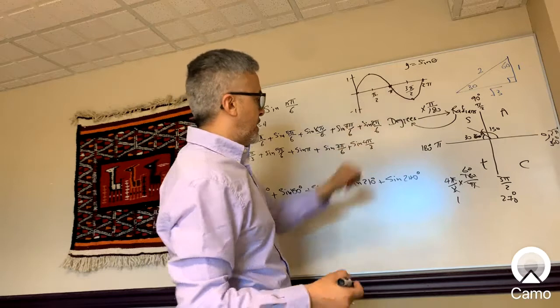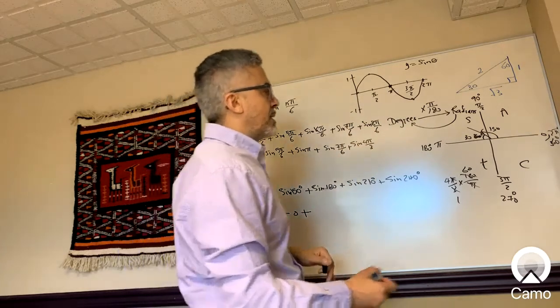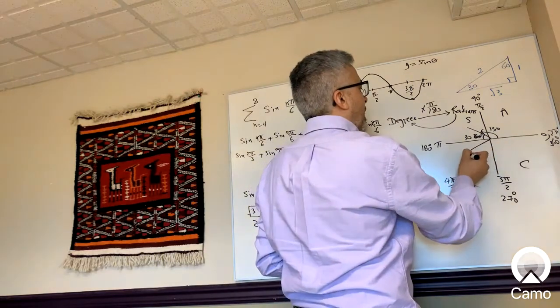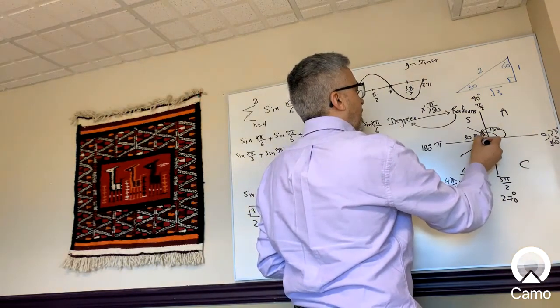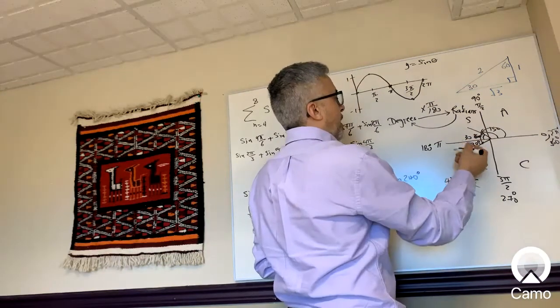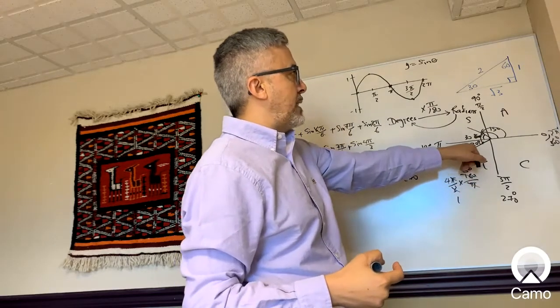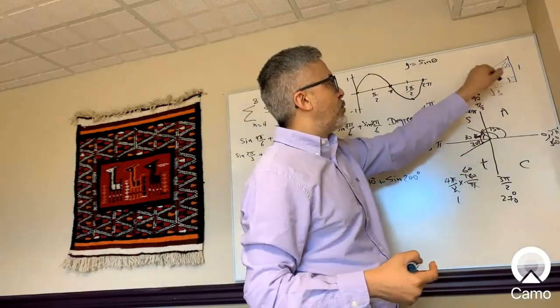Plus sine 210. 210 is right here, and the reference angle is 210 minus 180, which gives you 30 degrees. Sine is negative in this quadrant, and sine 30 is 1/2, so it's negative 1/2.